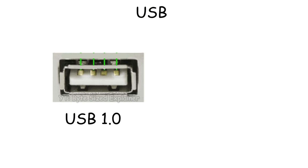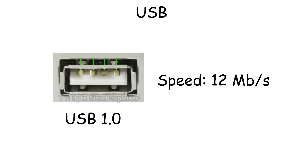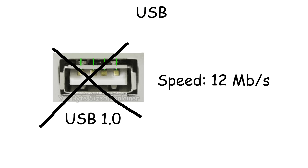Other than types, USB has various versions too. USB 1.0 could only transfer data at 12 megabits per second, and its ports were usually white, but it's no longer used today since it's way too slow.